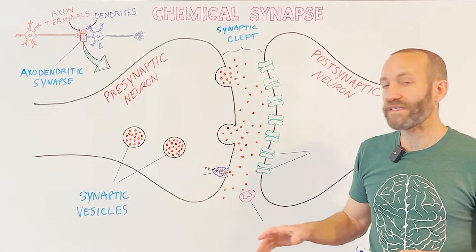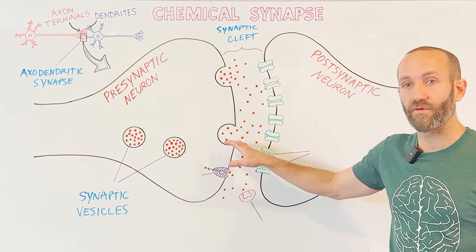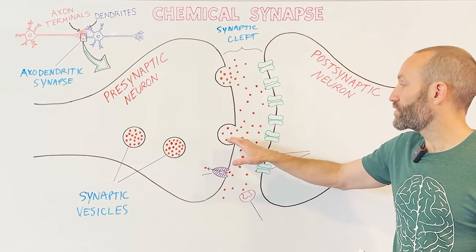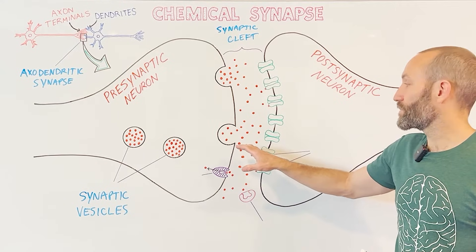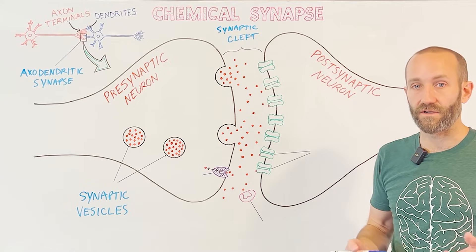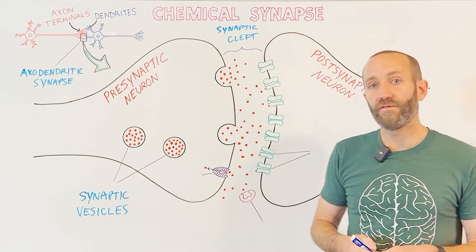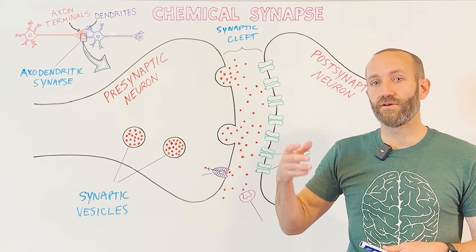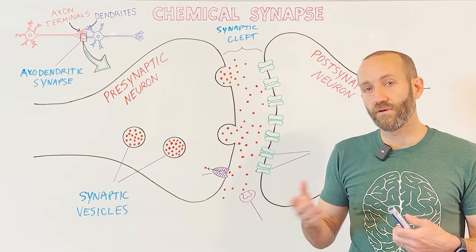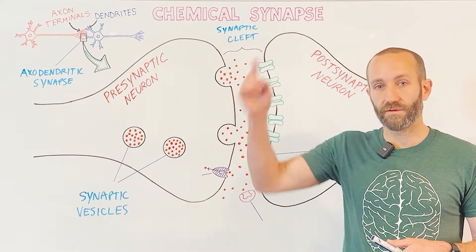These synaptic vesicles attach and fuse with the cell membrane of the presynaptic neuron, and by doing so, they release their neurotransmitters into the synaptic cleft in a process called exocytosis. By the way, if you want to know more about the sequence of events that leads to neurotransmitter release, you can watch my two-minute video on neurotransmitter release, which I'll link up here.